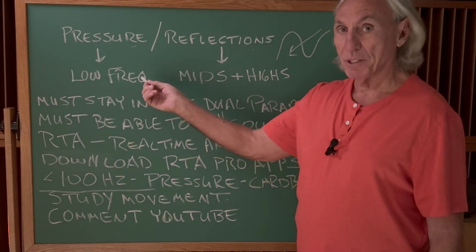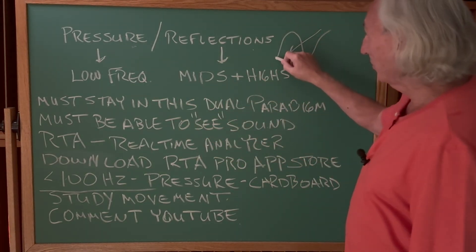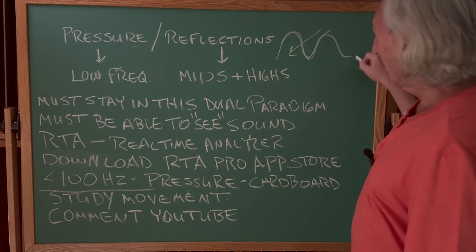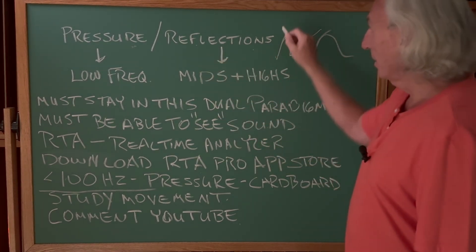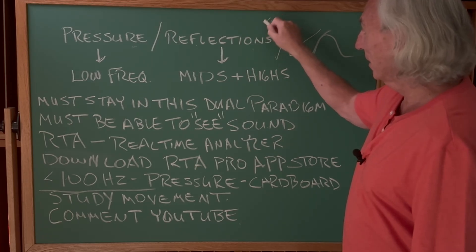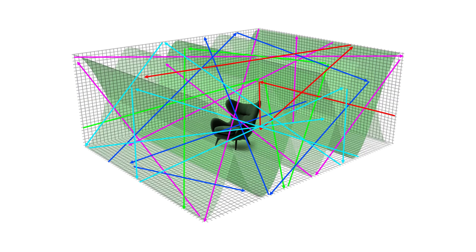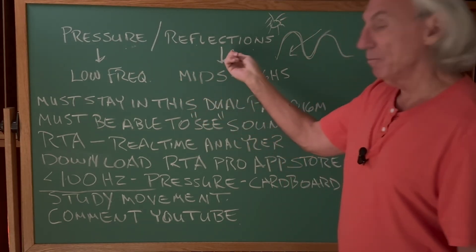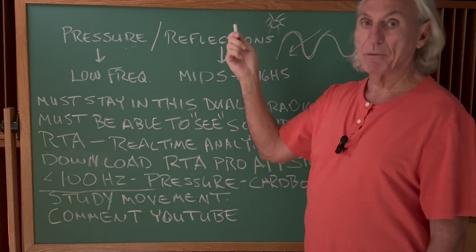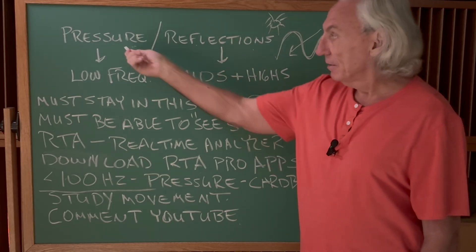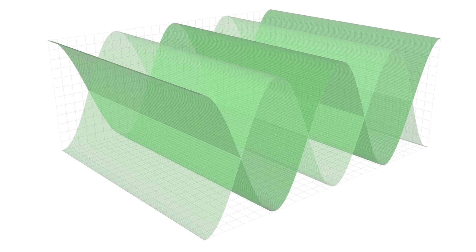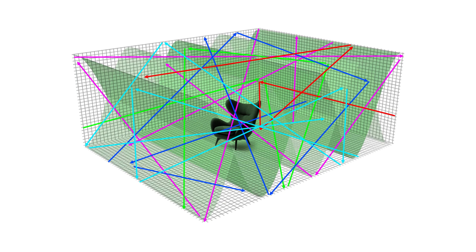Pressure we're going to view as low frequency. We're going to treat it as ocean waves — that's how we want to think of pressure. Reflections we're going to think of as sunshine. Reflections are more short, straight, direct line energy, and pressure is more wave energy. So wave and ray — think about the rays of sunshine. Pressure: ocean waves. Reflections: rays of sunshine.